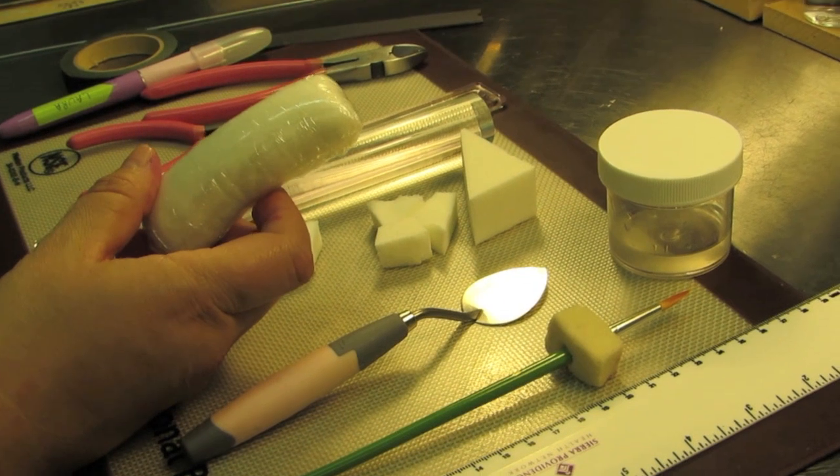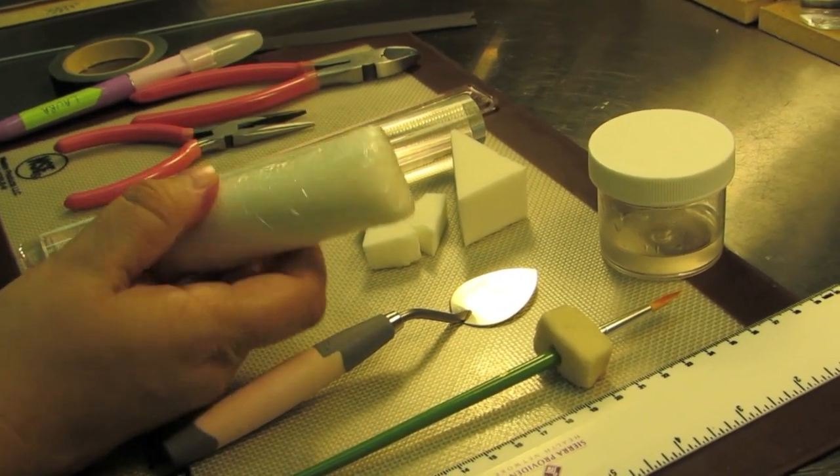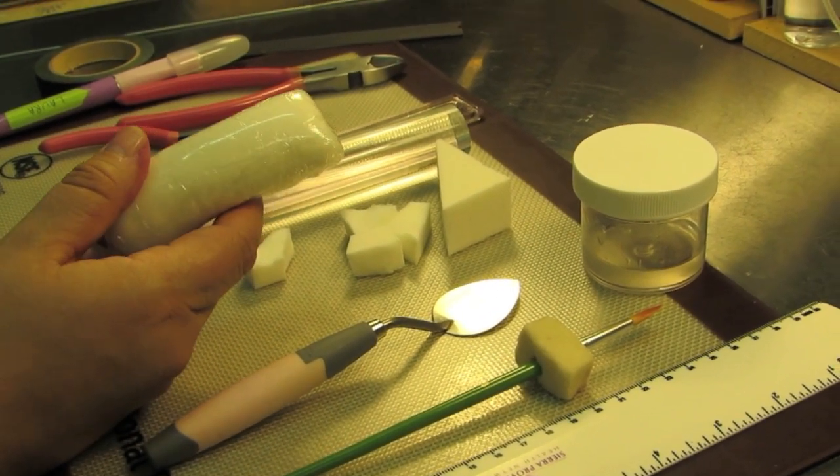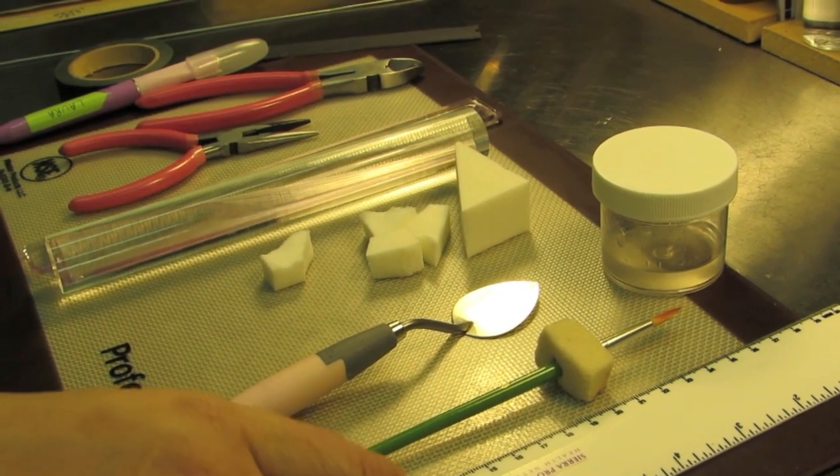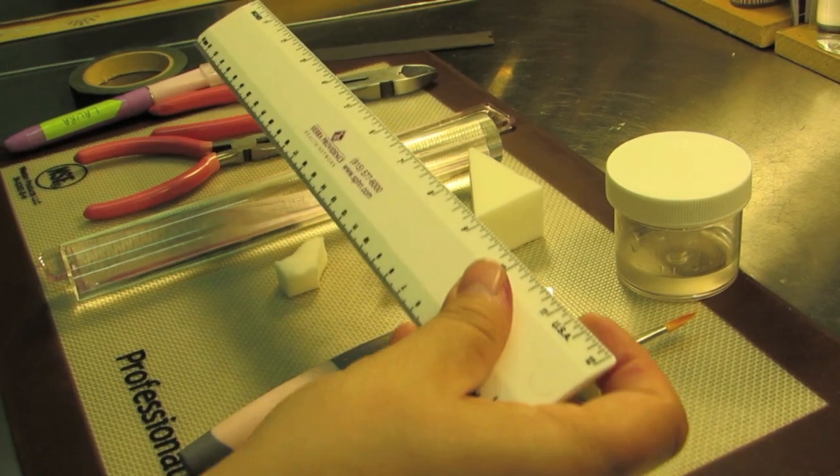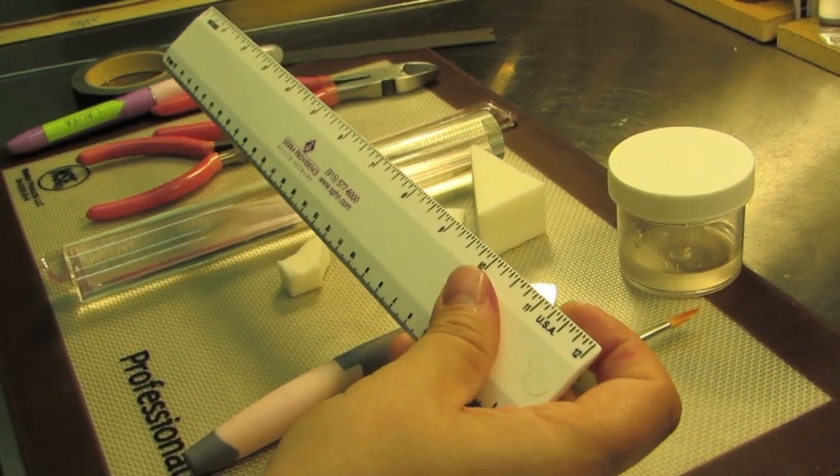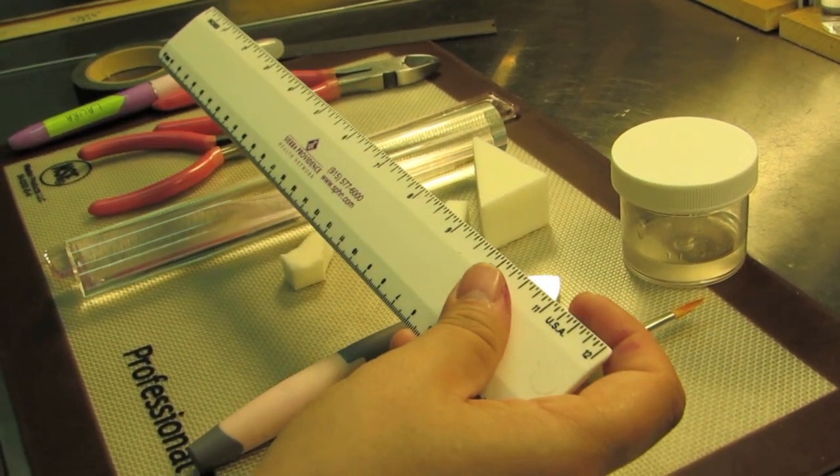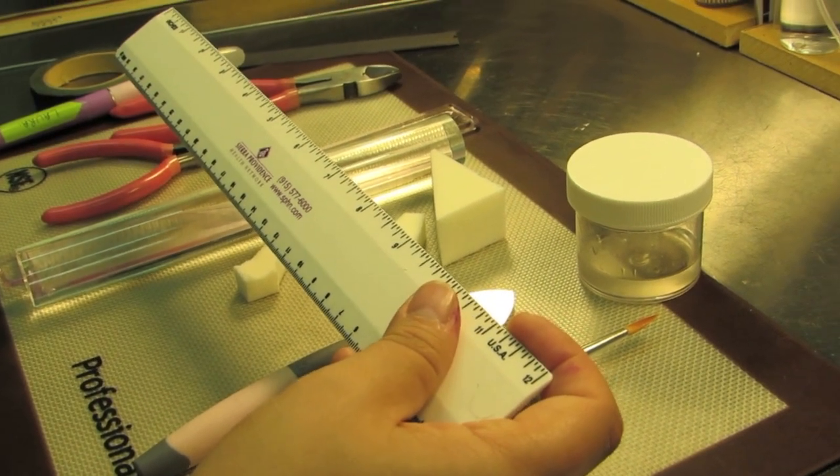You will be needing a lot more gum paste than this because you'll be creating a total of 24 loops. The next thing you will need is a ruler, which I highly recommend so that all of your loops are the same size.